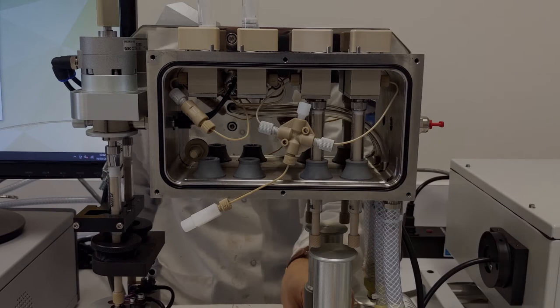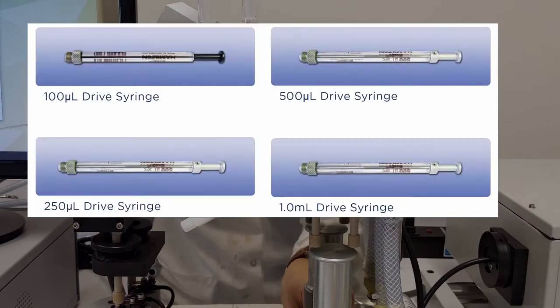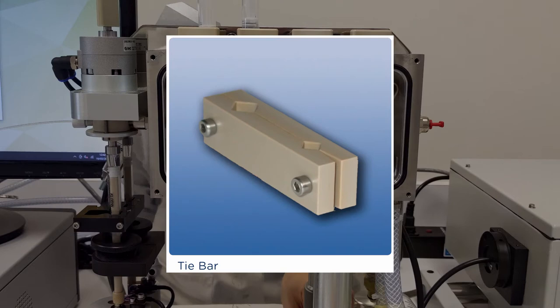Alternatively, if you are interested in asymmetric mixing applications for your stop-flow instrument, different volume syringes would be required. In that case, syringes would need to be replaced and a tie bar for appropriate pressure distribution installed.